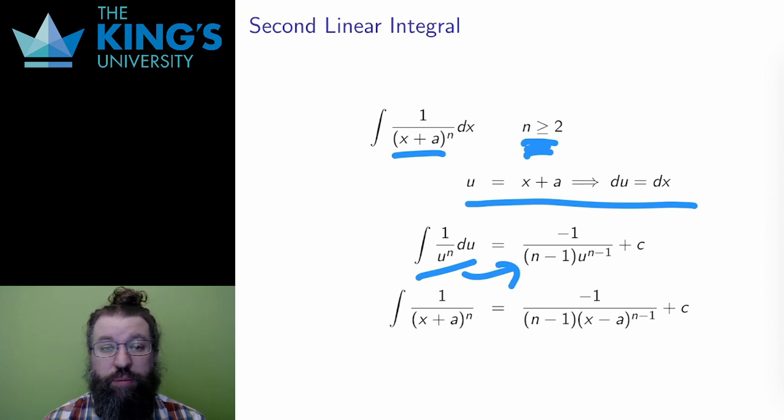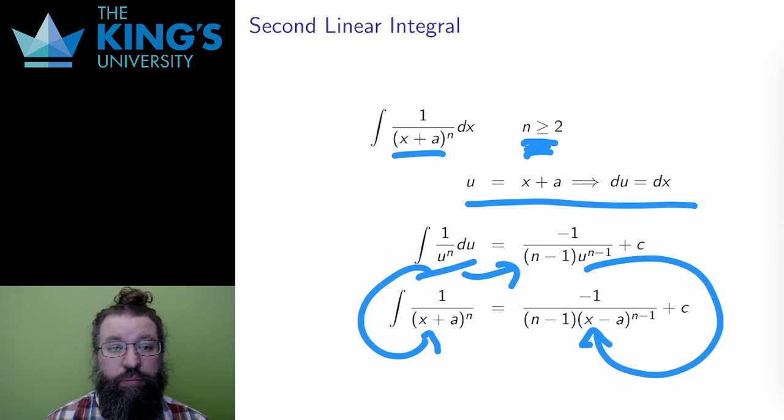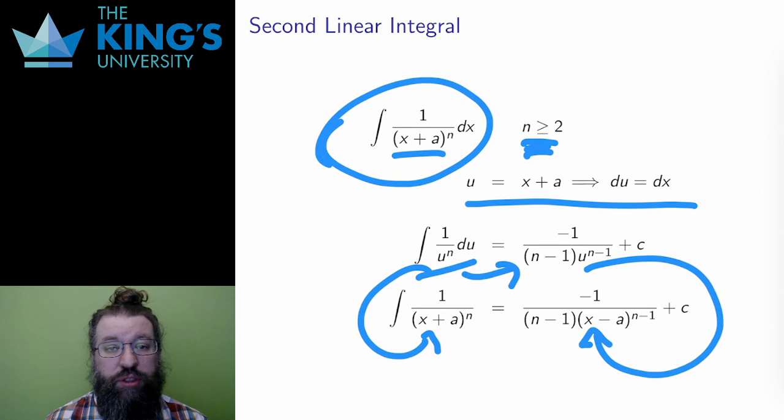The antiderivative, using the inverse power rule, is negative 1 over n minus 1 times u to the n minus 1 plus the integration constant. Well, then I'll reverse the substitution and replace u with x minus a again. And now I know the antiderivatives for any positive whole power of x plus a in the denominator.